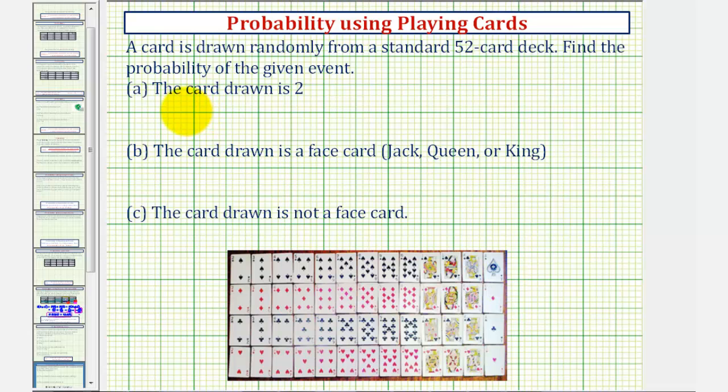So for part A, we want to find the probability that a card would be a 2. So the probability that if we select one card and it's a 2, is equal to the number of 2s divided by the number of cards.